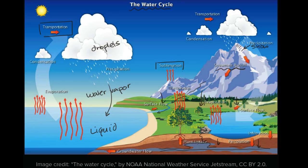You also see the word sublimation. That's going straight from the solid form of water — ice — into the gas form, water vapor. This happens in situations where it's cold, very dry, and there's generally low pressure. Instead of going into the liquid state, the water molecules just leave directly as water vapor.